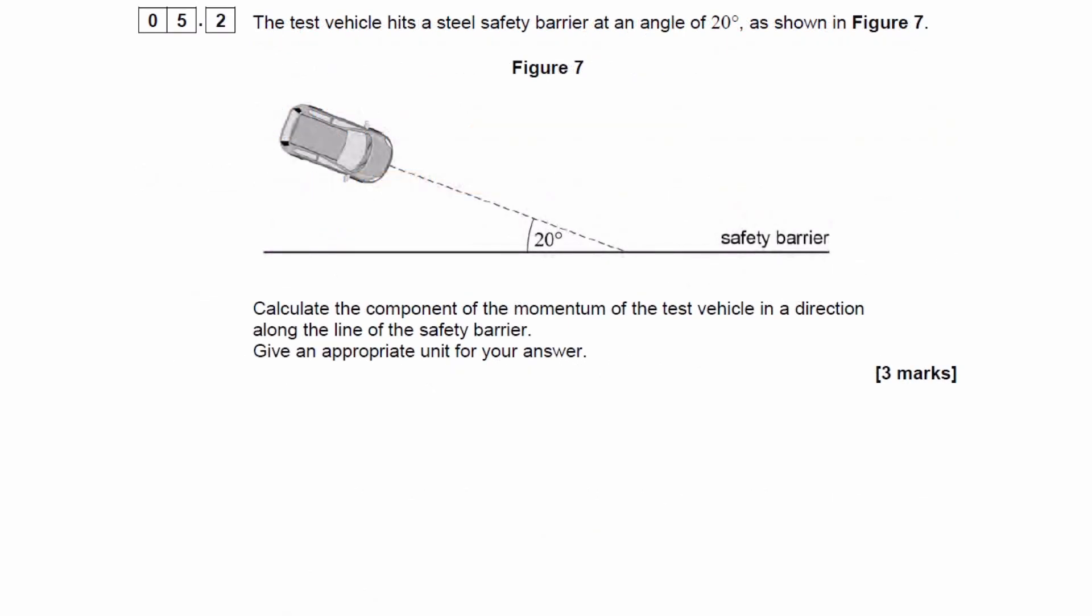For part two, the test vehicle hits the safety barrier at an angle of 20 degrees, as shown in the figure. Calculate the component of momentum of the test vehicle in a direction along the line of the safety barrier, and give an appropriate unit for the answer.